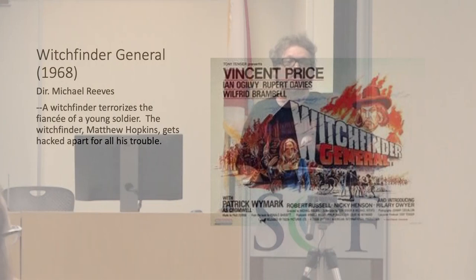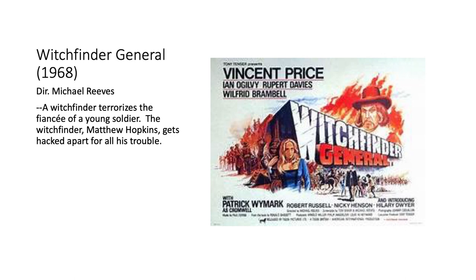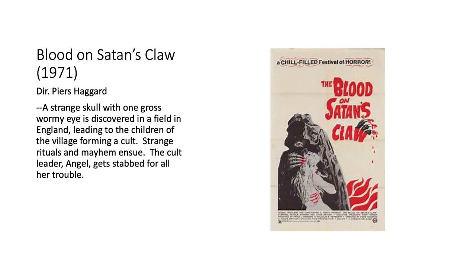There is an unholy trinity of films called the canon of folk horror. The first is Witchfinder General — a witchfinder terrorizes the fiancée of a young soldier; the witchfinder Matthew Hopkins gets hacked apart for all his trouble. The next is Blood on Satan's Claw, directed by Piers Haggard — a strange skull with one gross wormy eye is discovered in a field in England, leading the children of the village to form a cult.